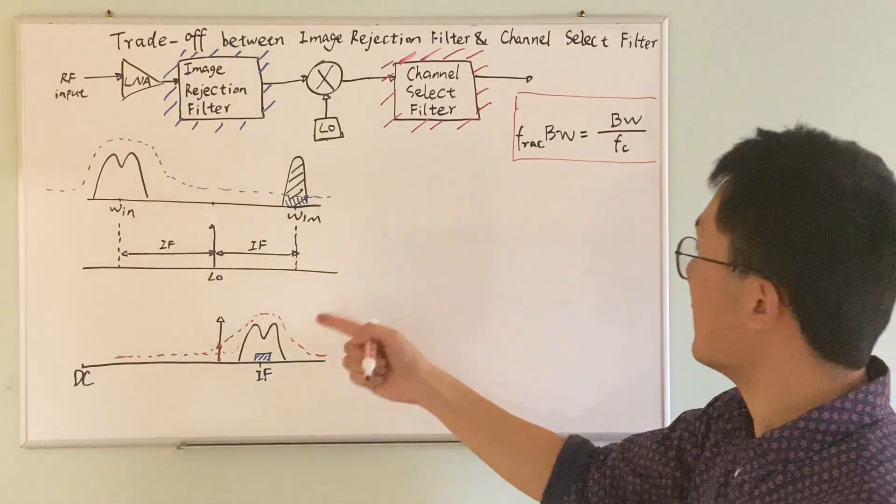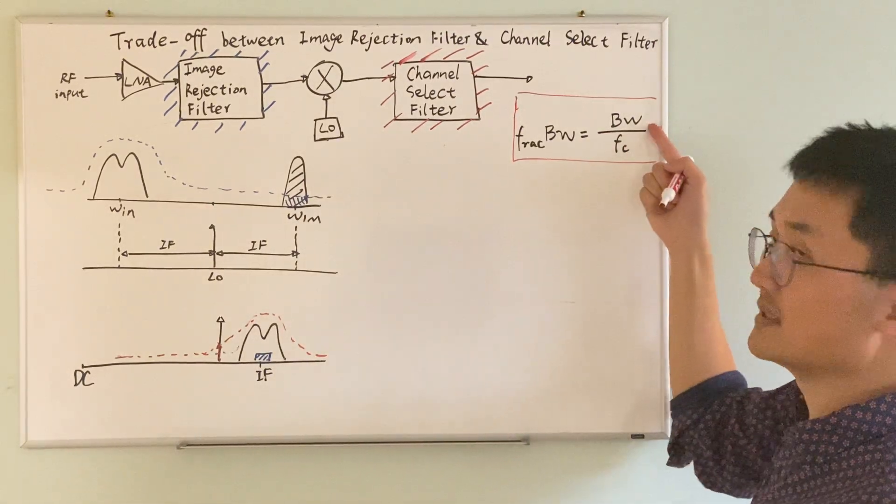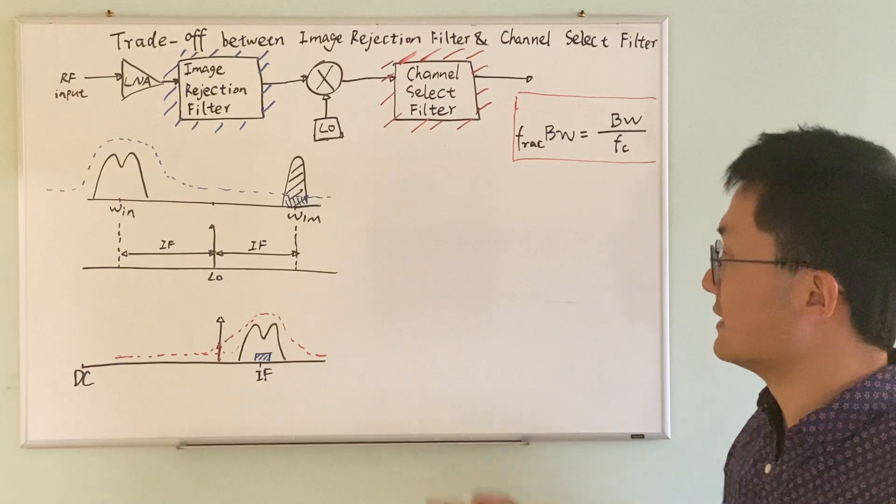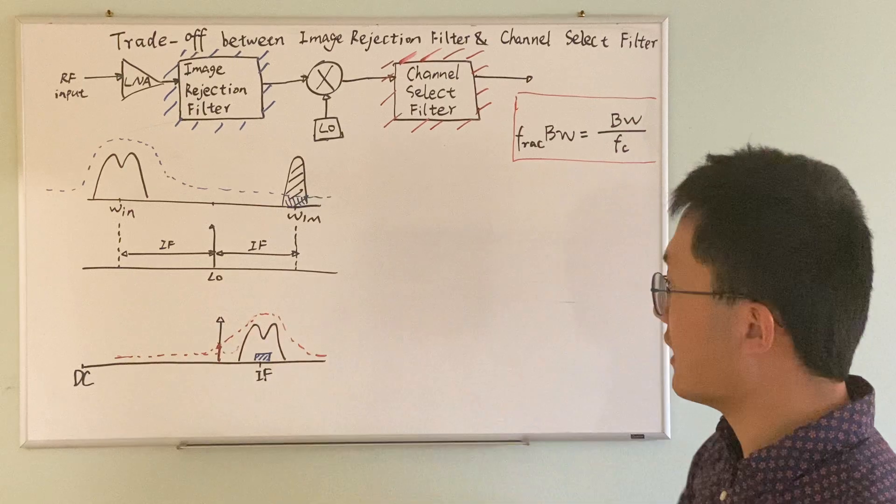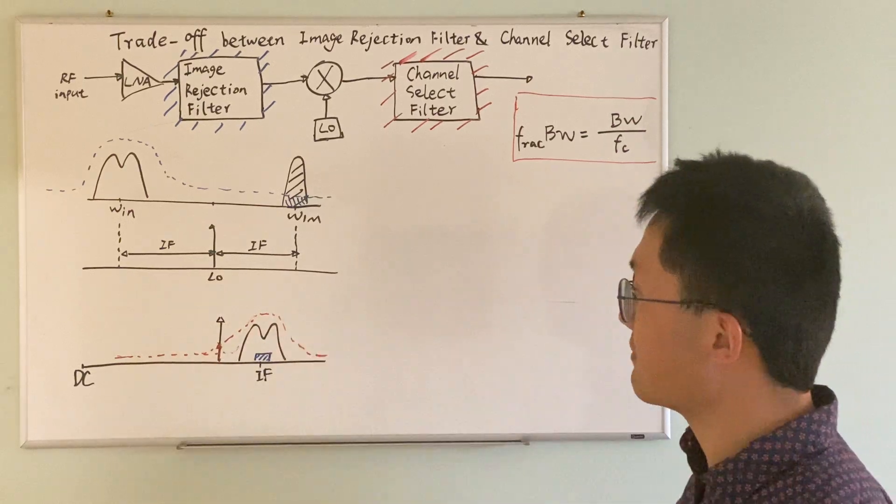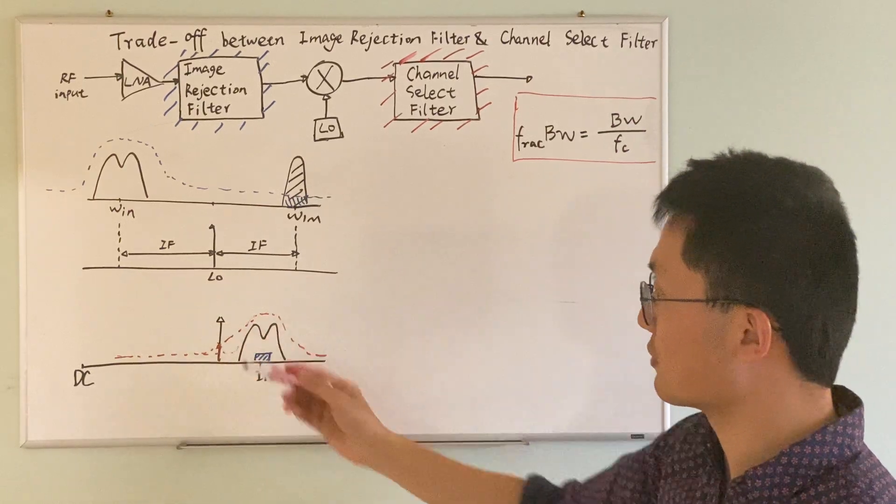that means the bandwidth is also quite wide. So it's very difficult to design a very sharp, highly selective bandpass filter to completely suppress the spur.